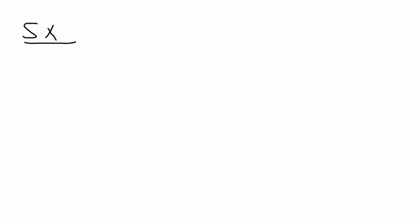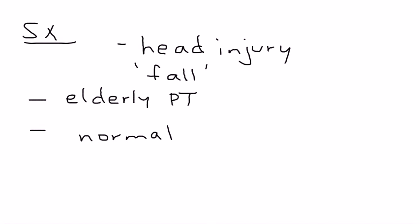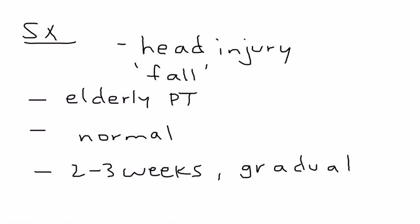The most important thing you'll see on clinical vignettes is how the patient presents. Usually the chronology is: there's some sort of head injury — maybe a fall or an accident — and usually they're describing an elderly patient. In the acute phase, the patient is relatively normal with no symptoms whatsoever. But then about two to three weeks later, when the patient may have even forgotten the initial traumatic event, there is a gradual decline in neurologic function.